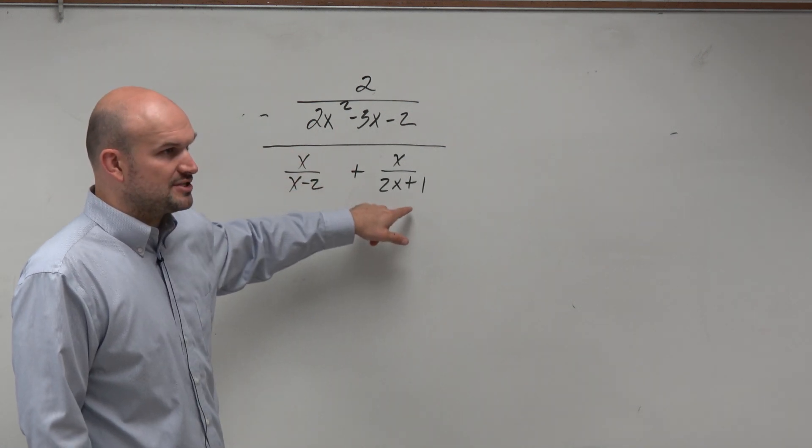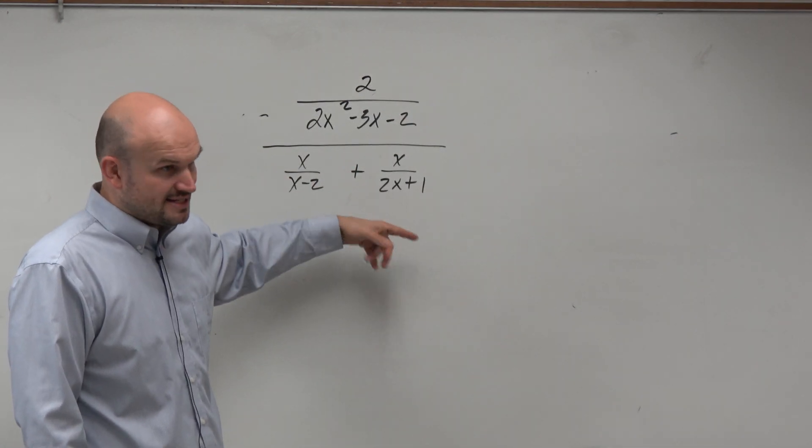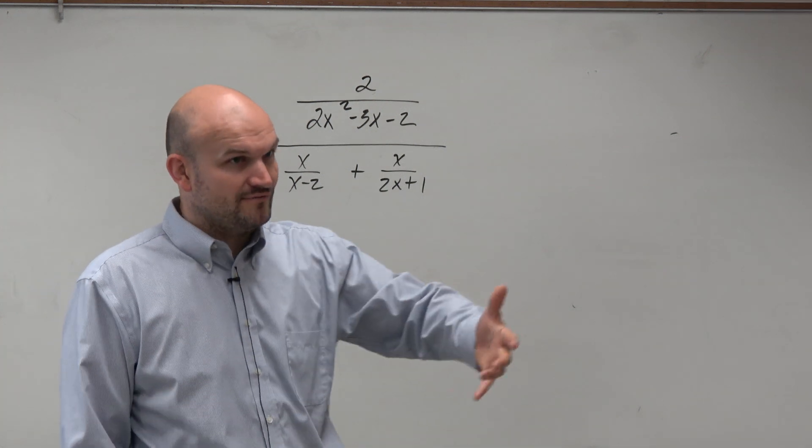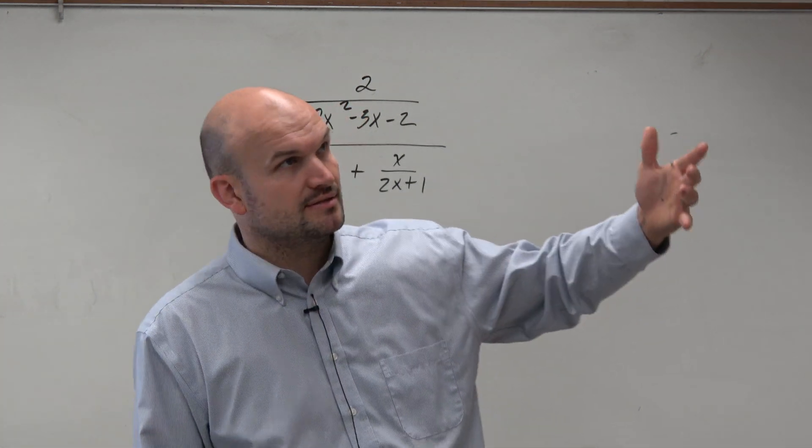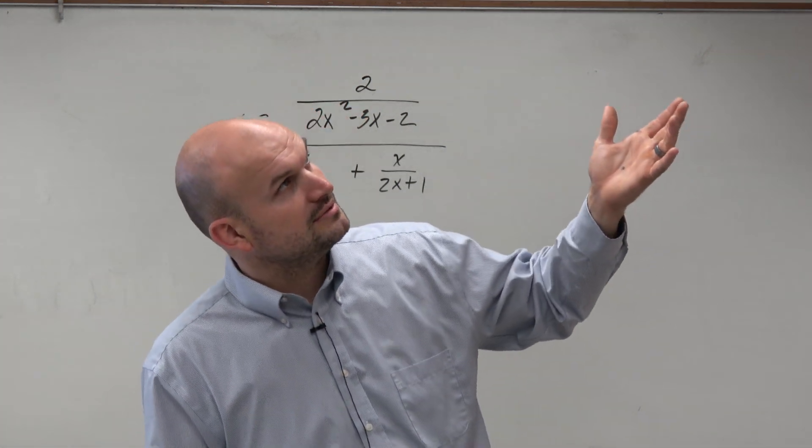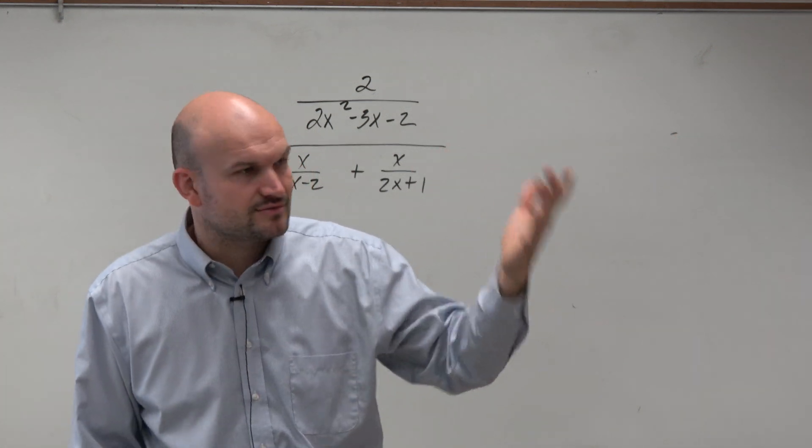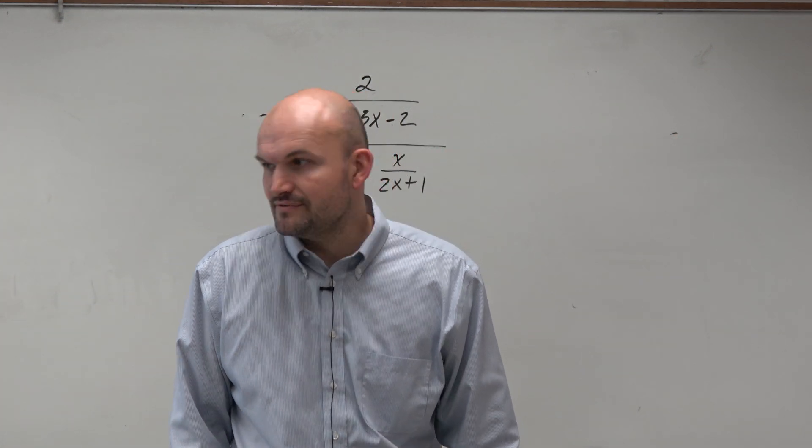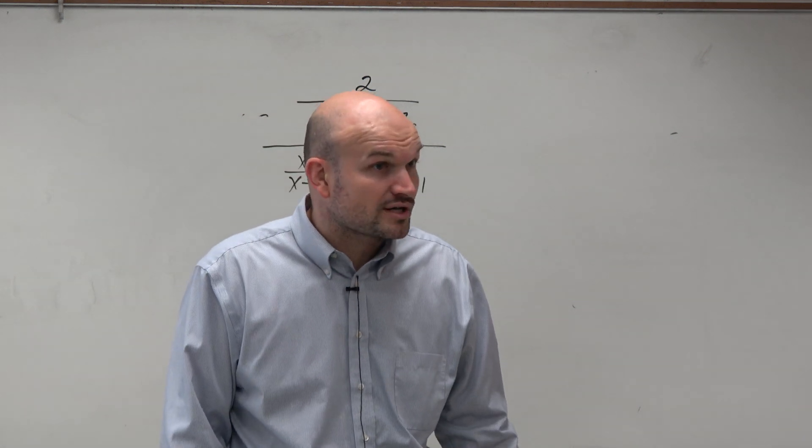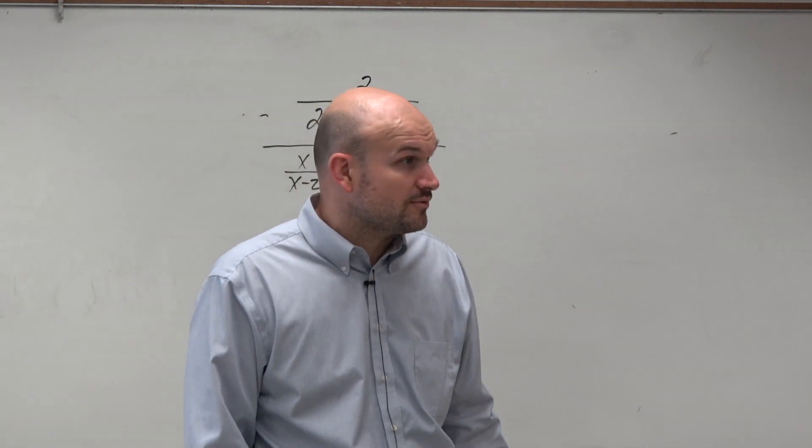If these were all three separate numbers, like 3, 4, and 5, what would the LCD of 3, 4, and 5 be? It's like 60, at least I know works. I don't even know if that's the LCD, but I know 60 works.